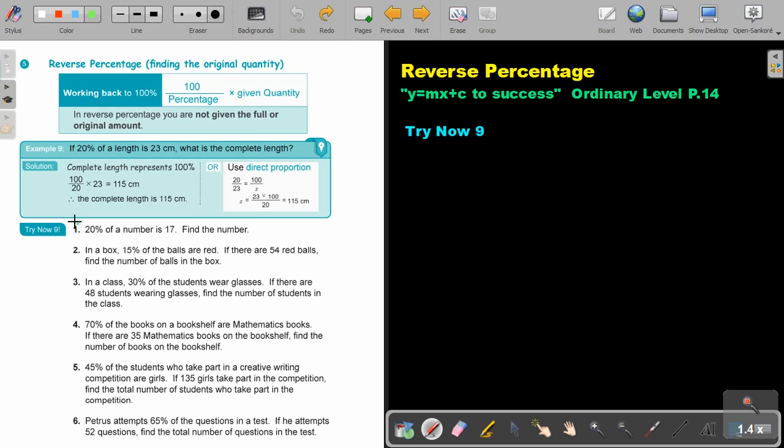Okay. I want you to stop the video and I want you to do number 1 and number 3. You can continue the video as soon as you are finished. Let's start. Number 1, 20% of a number is 17, find the number. So basically I am just going to put the 100% over the 20% and I am going to multiply by 17. And that will give me 85. So because it is a word sum, I can end by saying the number is 85.